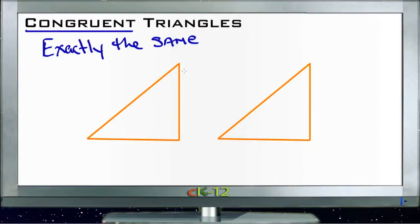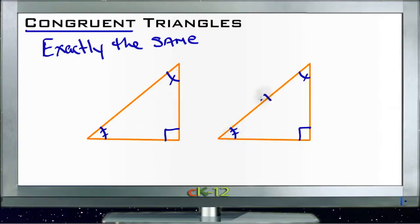Two triangles that are congruent have three sets of angles that are equal - one equal angle here, one equal angle here, and another equal angle down over here. They also have three sets of equal sides: the two-hash side, the one-hash side, and the three-hash side, meaning each pair of sides is exactly the same.